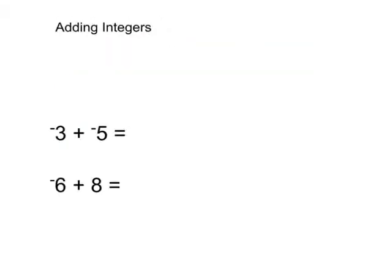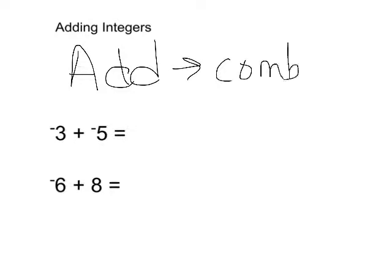Adding integers is really the same thing as combining. Adding just means combining. And so when you combine 3 negatives and 5 negatives, if you put those together you would have 8 negatives.